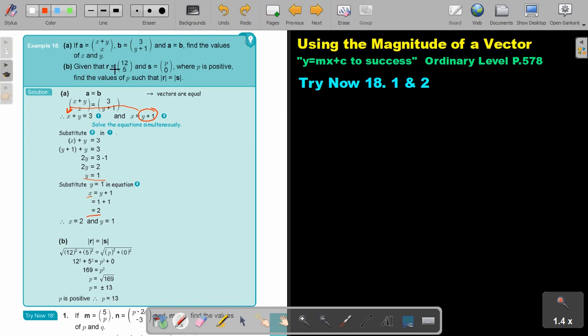The next one. Given that R is, this is the vector. S, this is the vector, where P is positive. This is important. Find the values of P such that.